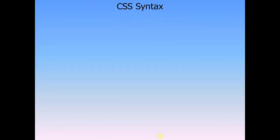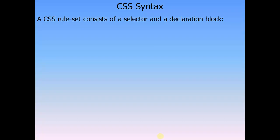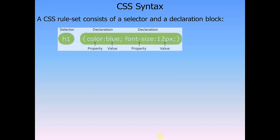CSS syntax — meaning how you have to type it to make it work. A CSS ruleset consists of a selector and a declaration block. The selector would be like your H1, P, or body. A declaration contains two parts: the property — like color — and the value — like blue. The next declaration might say font-size as the property and 12 pixels as the value. You can have many declarations for a particular selector, and each declaration has a property and a value.